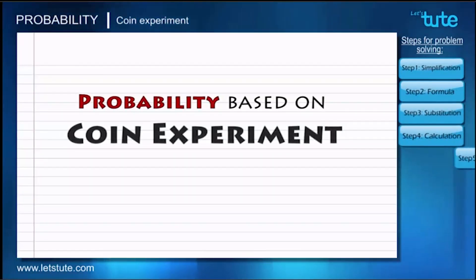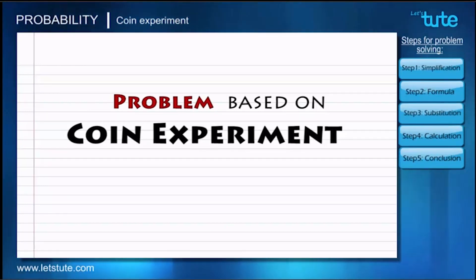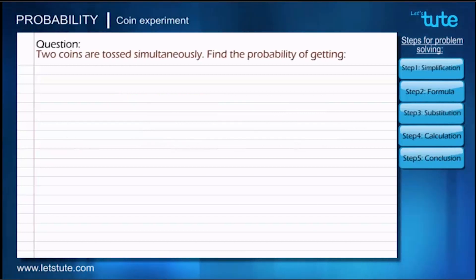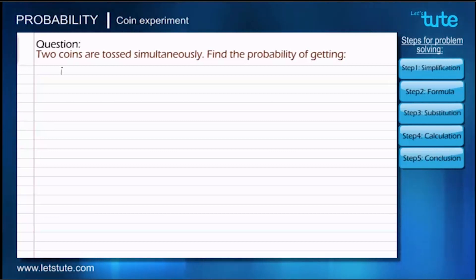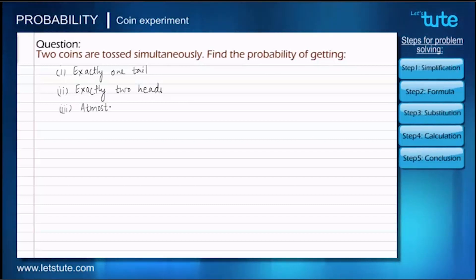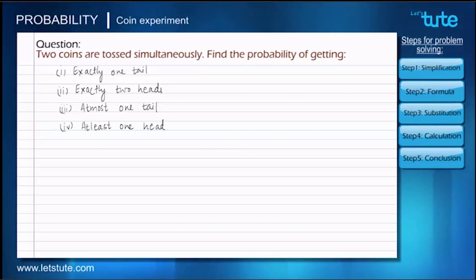In our previous session we learned to figure out probability based on a coin experiment. Today we'll solve a problem based on the same. Here's the problem: two coins are tossed simultaneously. Find the probability of: one, exactly one tail; two, exactly two heads; three, at most one tail; four, at least one head.